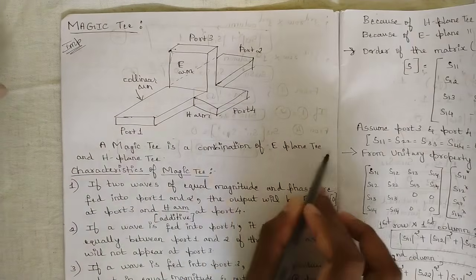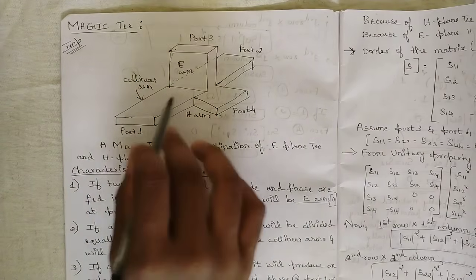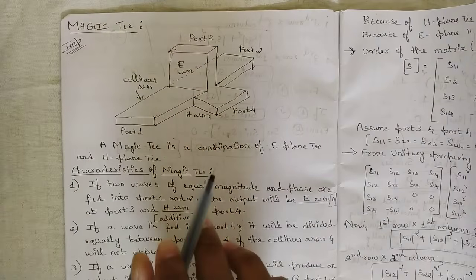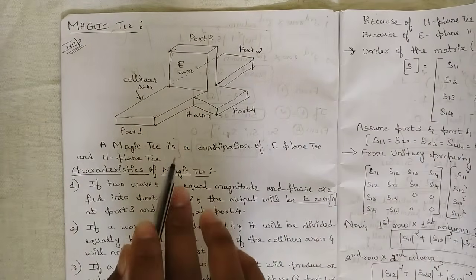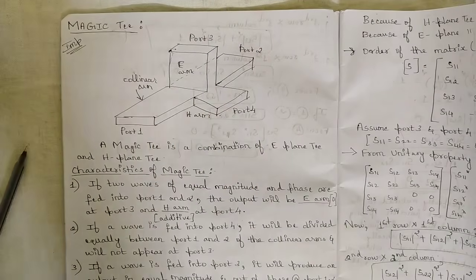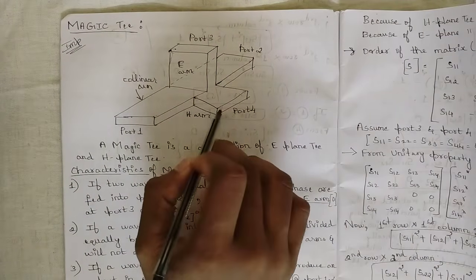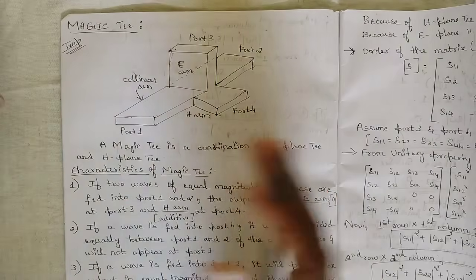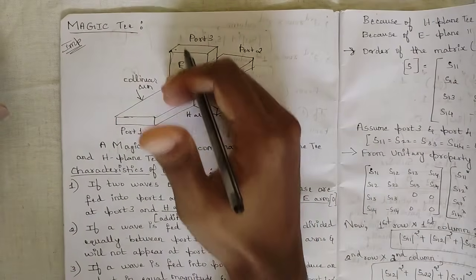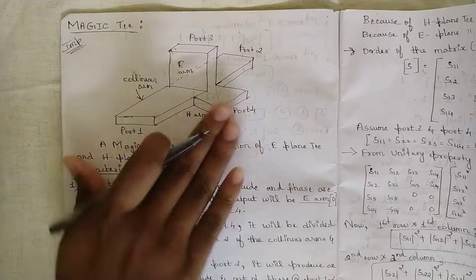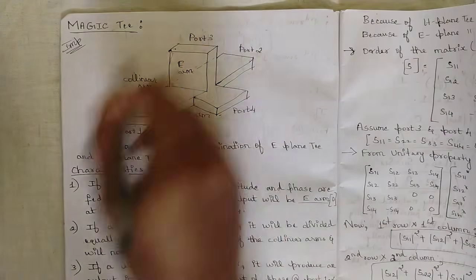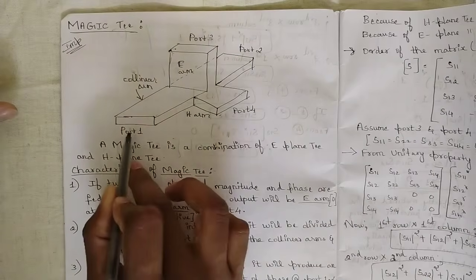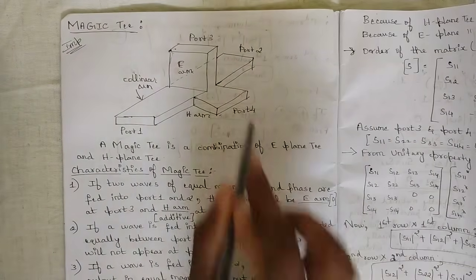Magic T is a combination of both E-plane T and H-plane T. From the figure itself you can recognize it. It has four ports because it has two extra arms — one is called the E-arm which is attached upwards, and one is the H-arm which is attached downwards vertically.